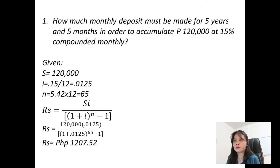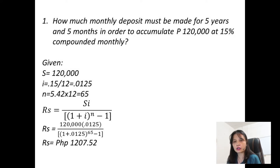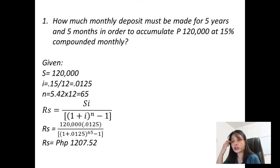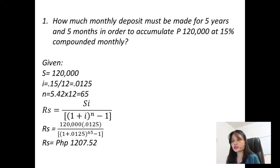For example: how much monthly deposit must be made for 5 years and 5 months in order to accumulate $120,000 at 15% compounded monthly? We need to find how much the monthly deposit is — that is the regular payment. First, identify the given variables. We have $120,000.